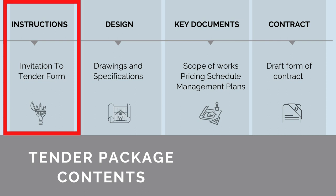Firstly, before we can even begin providing documents to define scope, we need to provide instructions to the tenderer on how to complete the tender. This document is referred to as an invitation to tender form. It defines what documents have been provided, how to fill them out, the key points of contact, and what documents need to be submitted with the subcontractor's quote.